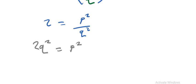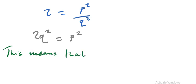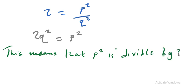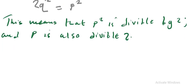So if we said 2q squared is equal to p squared, what does this expression mean? This means that p squared is divisible by 2, and therefore p is also divisible by 2.